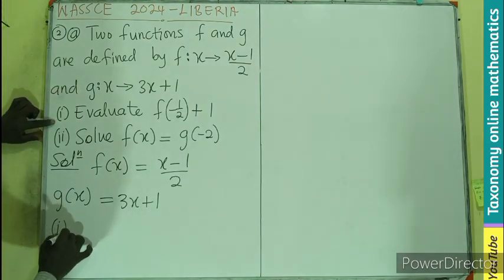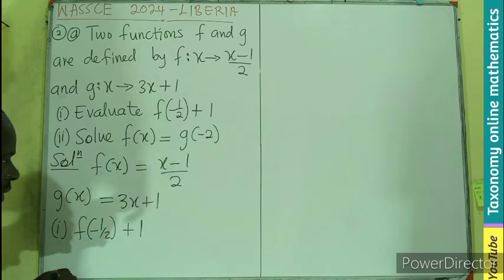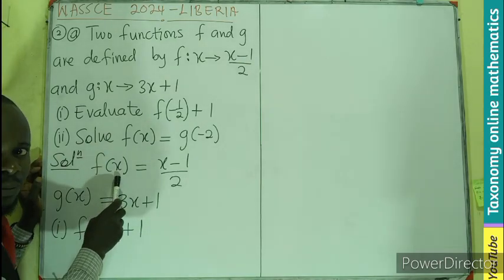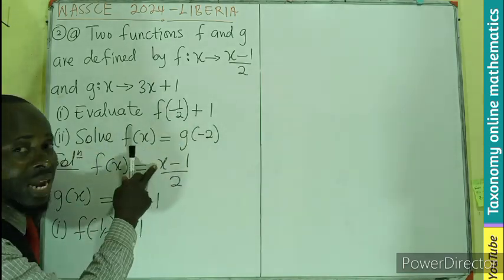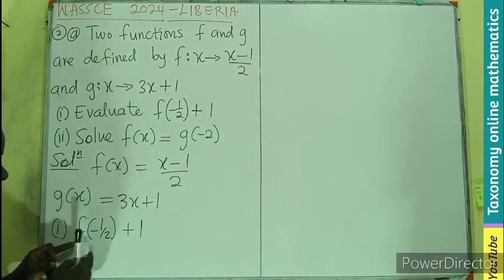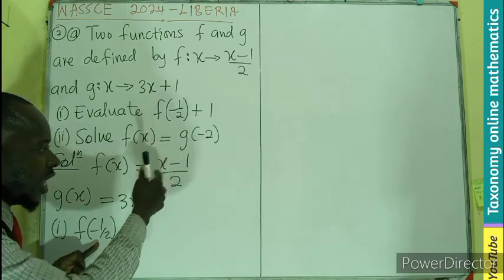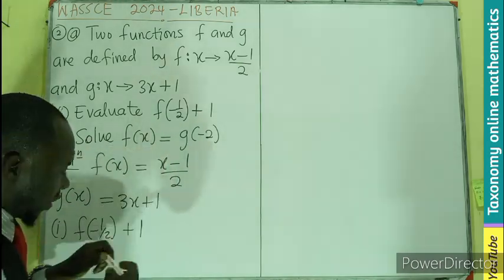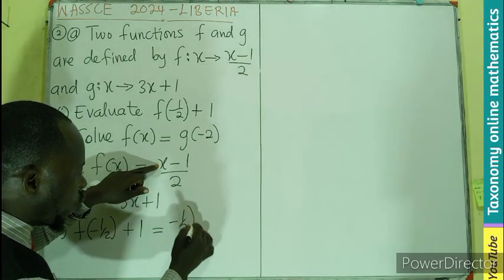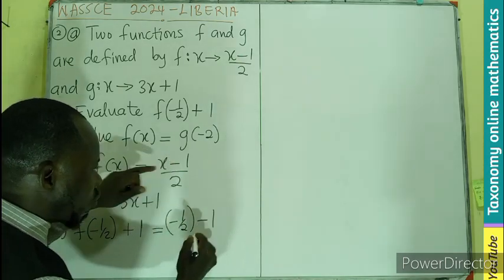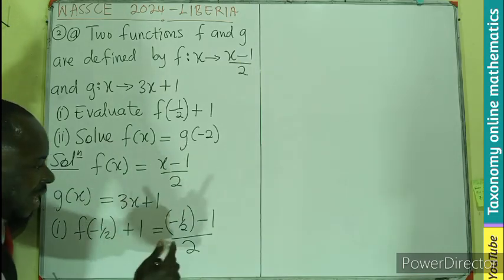So picking the first one, we have to evaluate f(-1/2)+1. Remember, we are taking f(x) as f being pregnant with x. Therefore, we expect the children to contain x. Now when f is pregnant with -1/2, in this same definition, it means the x has been changed with -1/2. So it will be changed here, giving you an expression of -1/2 replacing the x minus 1 divided by 2. Then plus 1.